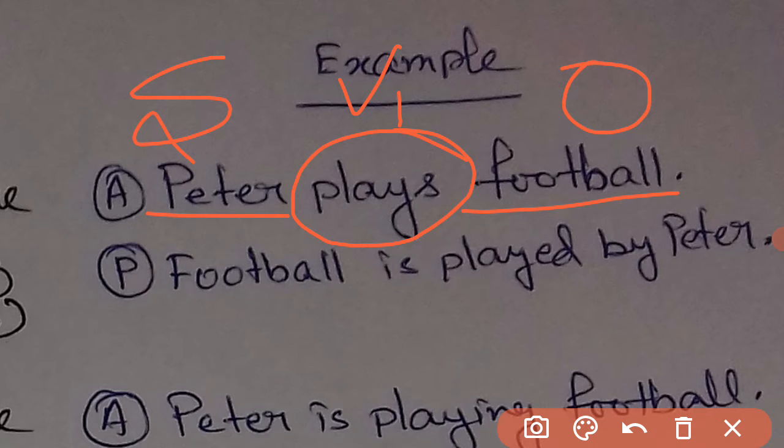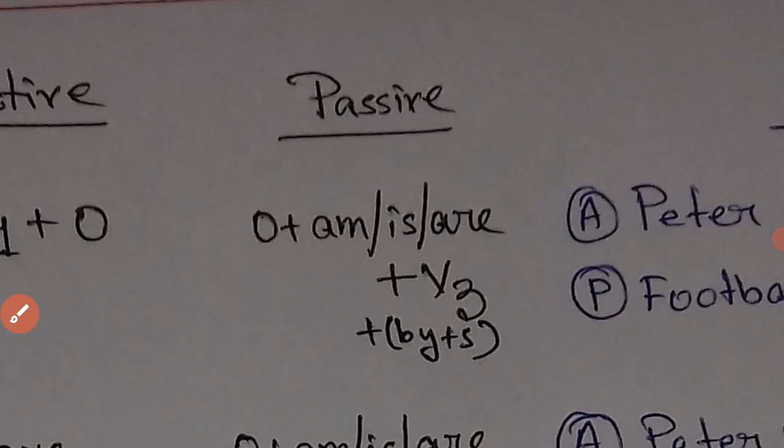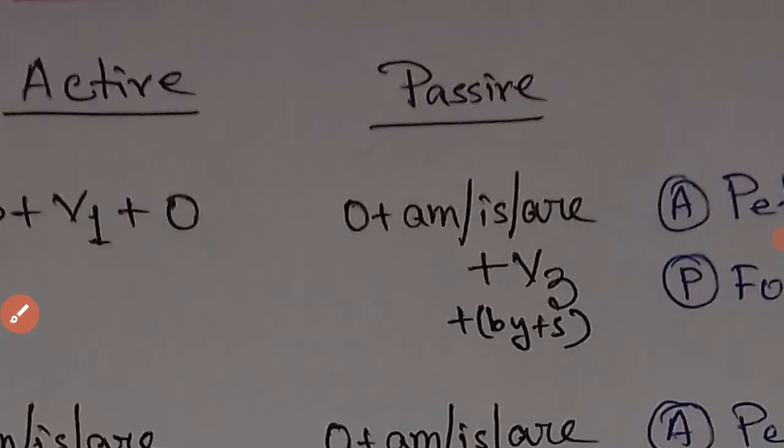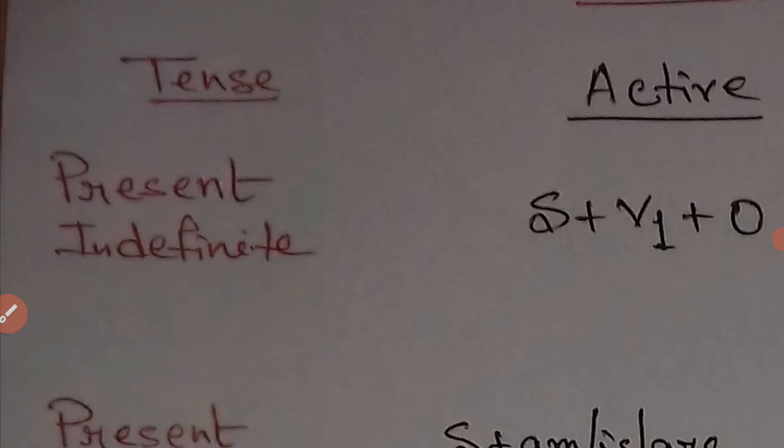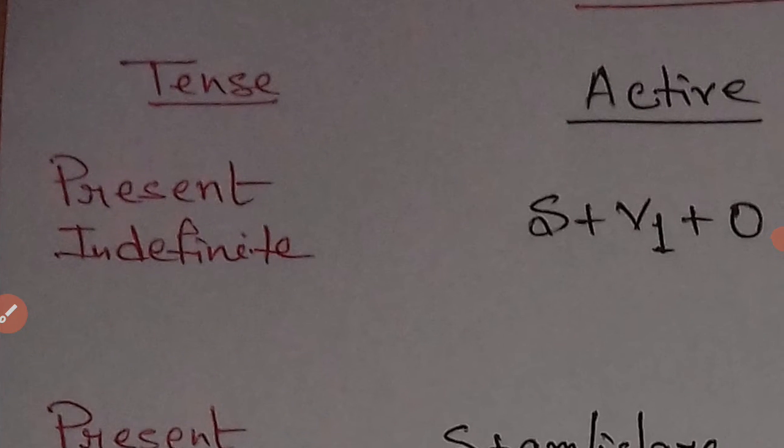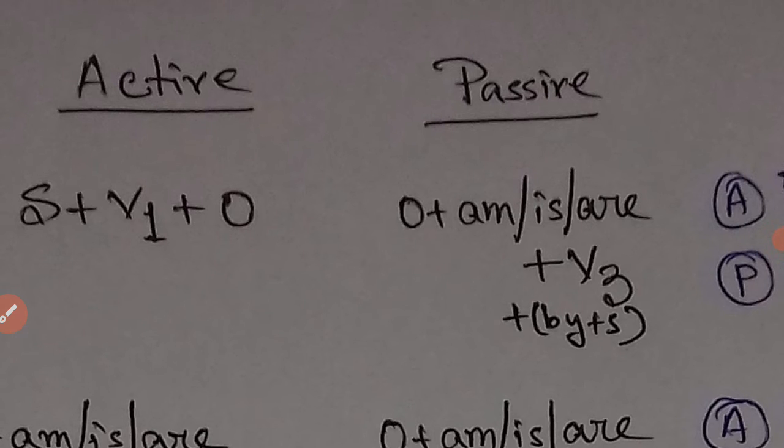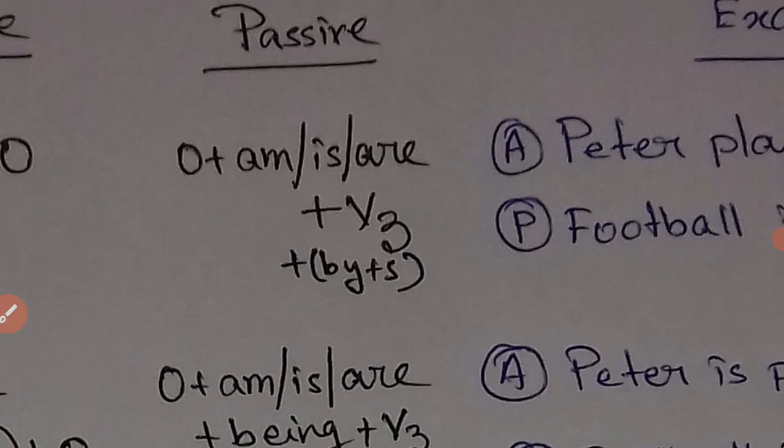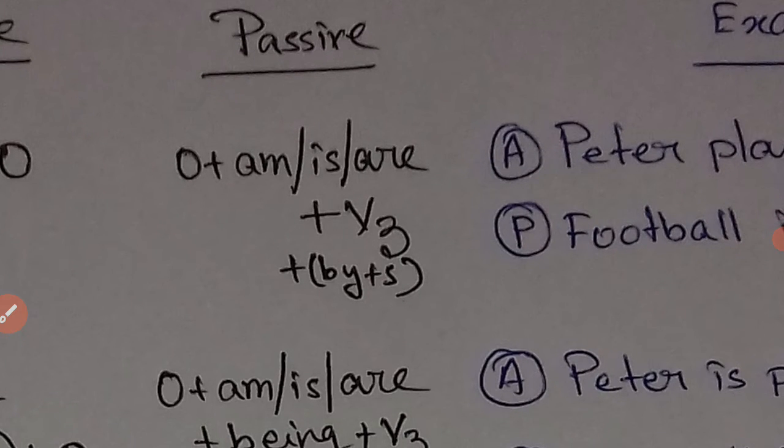Once you understand the structure in a sentence, you need to understand how you can match it up with the formulas given here. Subject V1 Object is the formula for active voice in case of present indefinite tense. Once you've found which formula or which tense is being used in a particular sentence, you will understand the passive formula. This is the passive formula that you need to apply in case of changing the voice.